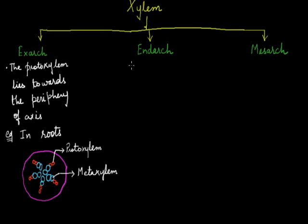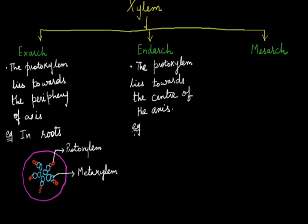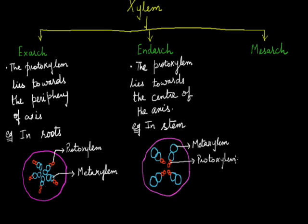In the endarch condition, which is opposite to exarch, the proto-xylem is situated toward the center of the axis. This condition is present in the stem. In the diagram, the meta-xylem depicted by blue vessels is at the periphery, while the proto-xylem is toward the center.